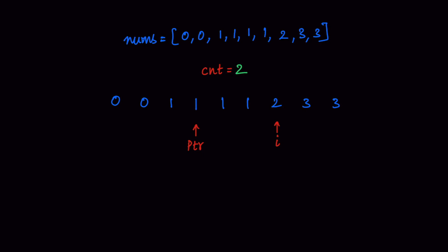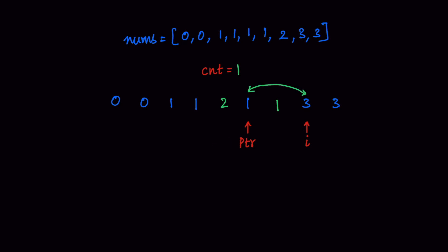After incrementing the i pointer, we can clearly see that nums[PTR] is not equal to nums[i]. So in this case, we update our PTR value and also reset the count to 1. PTR is updated and count is initialized to 1. Then we perform the swap of the PTR and i locations. After performing the swapping, we move on to the next element and increment the i pointer. After incrementing, nums[PTR] is not equal to nums[i], so we increment PTR, initialize count to 1, perform the swapping of 1 and 3.